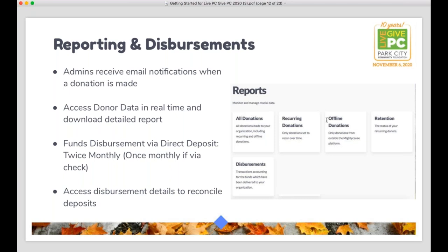For disbursement: funds will be dispersed on a twice-monthly basis via electronic funds transfer. It's a quick and easy process to sign up, and once you do, you'll receive funds twice a month. If you don't sign up for electronic funds transfer, which is free by the way, you will receive a check. Check donations are batched once a month — so all donations received in November, for example, would be sent by check around December 10th, with a $5 check fee. We definitely encourage all organizations to sign up for direct deposit if possible. You can access detailed disbursement reports in your Reports tab.